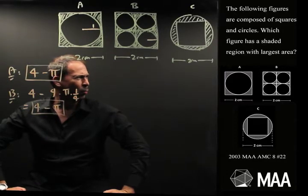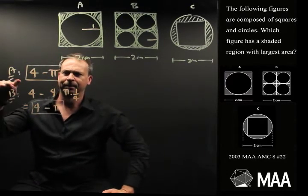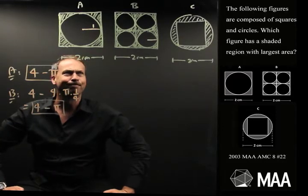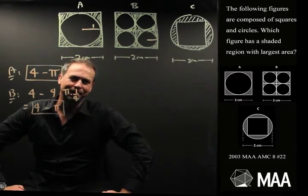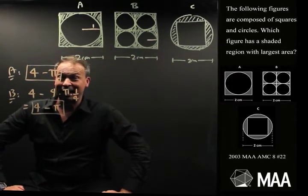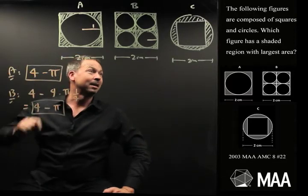What was the question? Which figure has the shaded region with the largest area? The first two are the same. Then I'm wondering about this third one. Is that also 4 minus pi? Well, I guess I can keep playing my way through it, because I'm now feeling a little perturbed by this. Two answers are the same. Let's keep going.